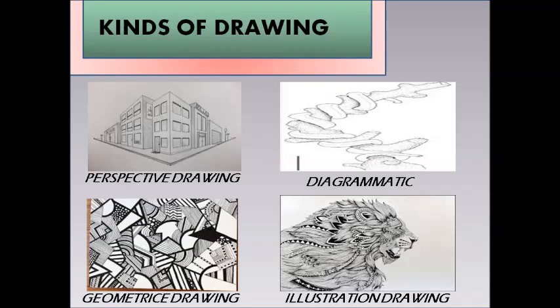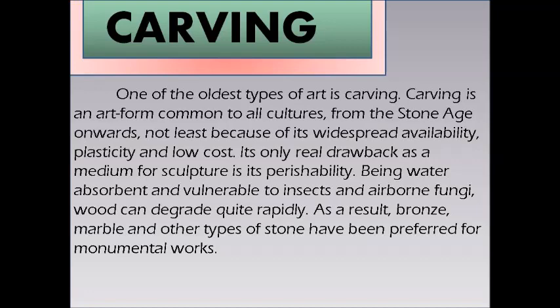As one of the oldest types of art, carving is an art form common to all cultures from the Stone Age onwards — not least because of its widespread ability, plasticity, and low cost. Its only real drawback as a medium for sculpture is its perishability. Being water-absorbent and vulnerable to insects and airborne fungi, wood can degrade quite rapidly. As a result, stone has been preferred for monumental works.